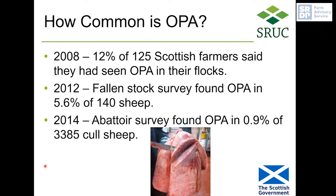It's quite difficult to give a definitive figure for prevalence. A 2008 survey of 125 Scottish flocks found about 12 percent of farmers had seen OPA in their flocks. A 2012 fallen stock survey of 140 sheep detected OPA in just over five percent of animals. A 2014 abattoir survey found OPA in just under one percent of 3,385 cull sheep — clinically healthy animals — showing infection can be present without obvious signs.